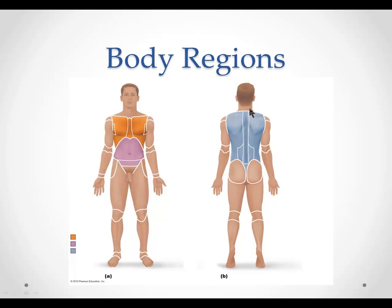The gluteal region includes both sides of the buttocks, and the popliteal region is the region in the back of the knee. The cervical region includes the neck — so if someone has a cervical spinal cord injury, that means they have an injury in the neck area. The axillary region is the armpit. If someone is taking a temperature on a patient with Alzheimer's who won't allow a temperature probe in their mouth, an axillary temperature is a good alternative. This works well for toddlers too.